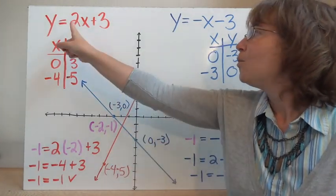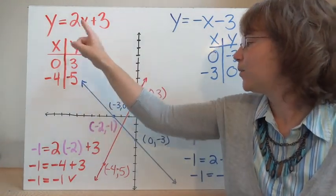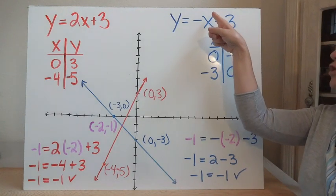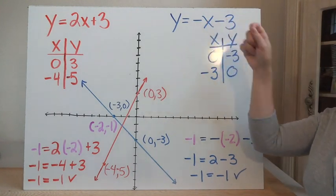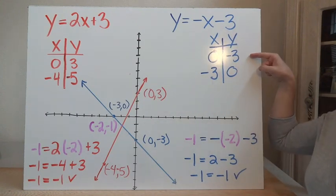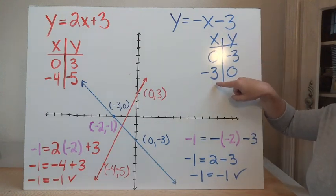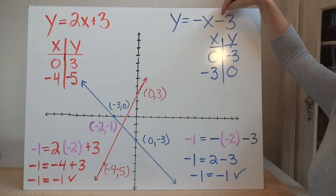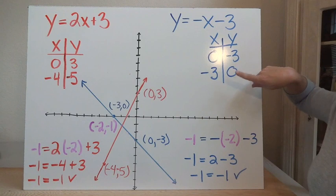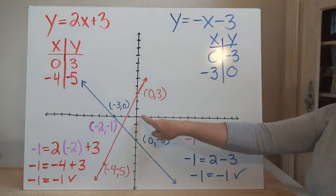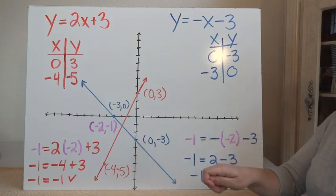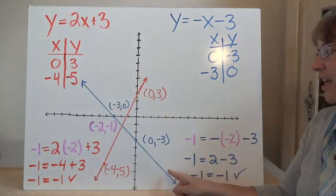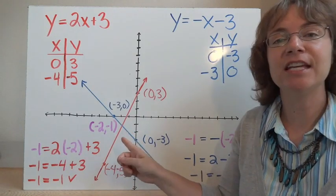All the solutions on this line will fit the equation and make it true. Now I'll graph my second line, y equals negative x minus 3. Choosing x equals 0: negative 0 is 0, minus 3 gives y equals negative 3, so the point is (0, negative 3). Choosing x equals negative 3: negative of negative 3 is positive 3, minus 3 gives y equals 0, so the point is (negative 3, 0). I take a straight edge and connect those two points. Now I can see the point where they intersect.